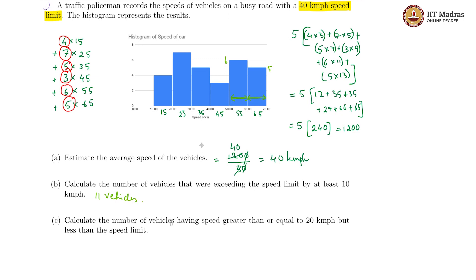For the last part we have calculated the number of vehicles having speed greater than or equal to 20 kilometer per hour, but less than the speed limit. That would be this and this, this is both of these are lesser than 40 but greater than or equal to 20. That gives us 7 plus 5 again, so this is then 12 vehicles.